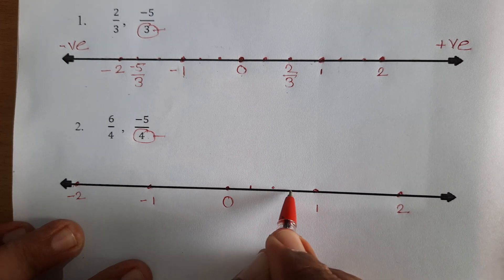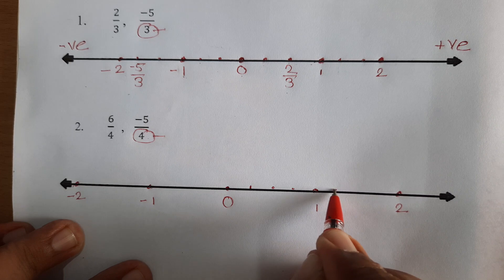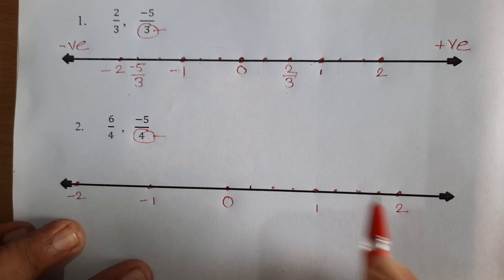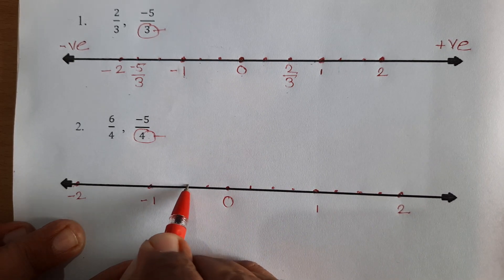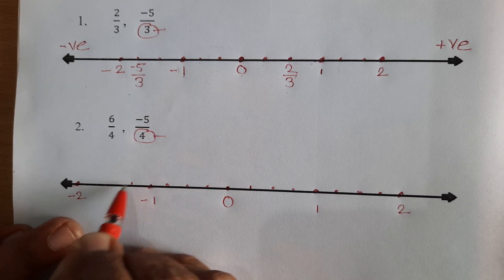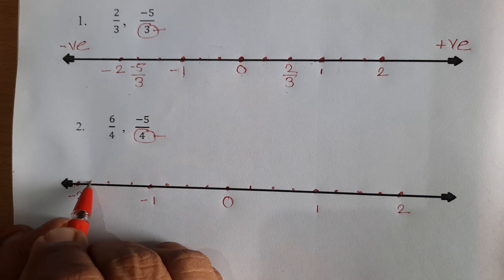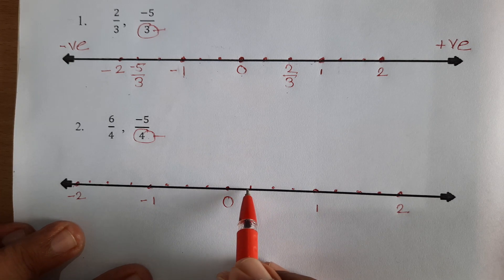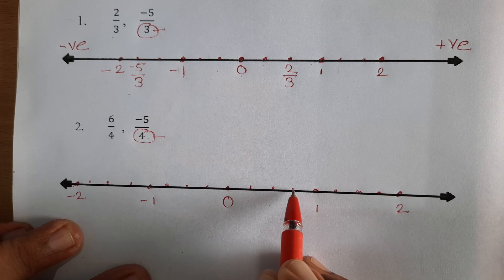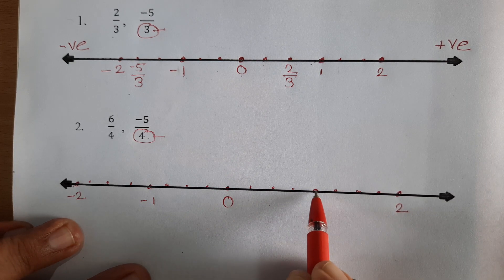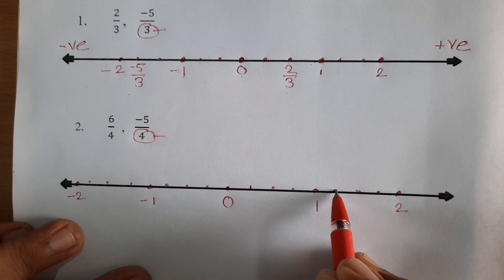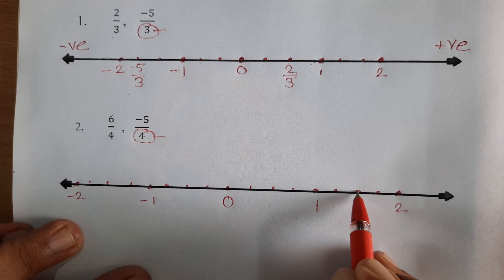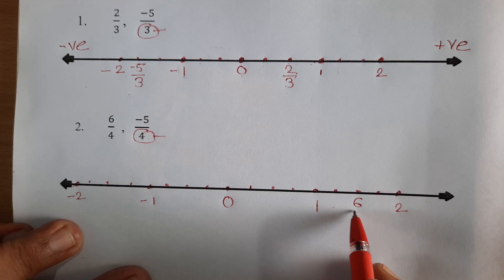To divide into 4 equal parts, we have to take 3 points in the distance — marking 1, 2, 3 in each interval. Now, this is 0. This is 1 upon 4, 2 upon 4, 3 upon 4, 4 upon 4 — that is 1 — then 5 upon 4, and this is 6 upon 4.